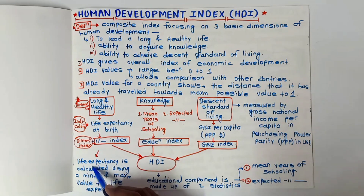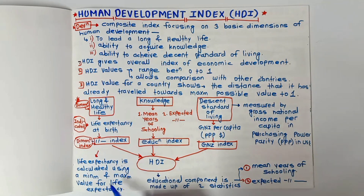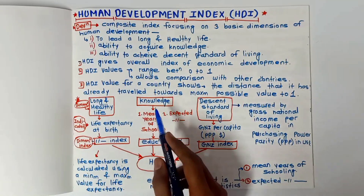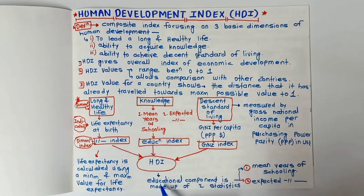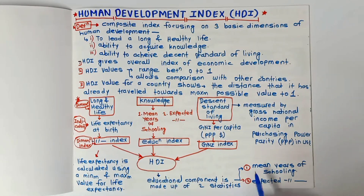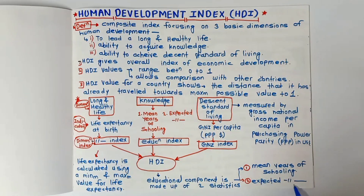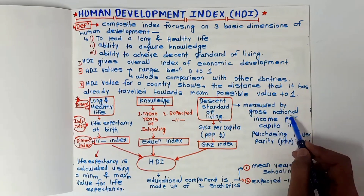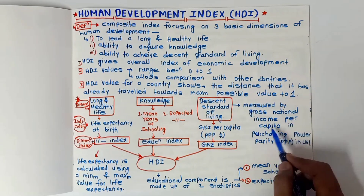The long and healthy life dimension — life expectancy — is calculated using minimum and maximum values for life expectancy. The educational component, which represents knowledge, is made up of two statistics as we have seen: mean years of schooling and expected years of schooling. The decent standard of living dimension is measured by Gross National Income per capita in Purchasing Power Parity in US dollars.